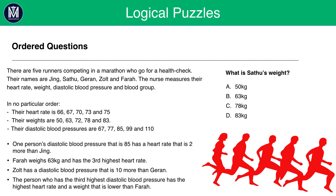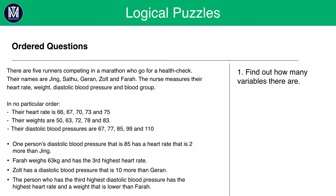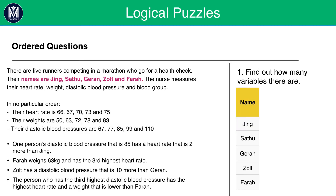Now let's take this question step by step. The first thing we need to do is find out how many variables there are. We see in the second line that there are five names: Jing, Satu, Jiran, Zolt and Farah. What I'd recommend you do is draw a table with this information. Whenever there's information with ordered questions, especially when there's three variables and five names, the best approach would not be the crosshatch or fill-in method — it would be a small simple table.